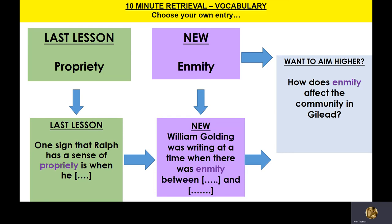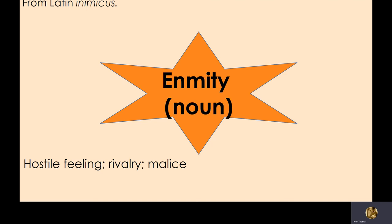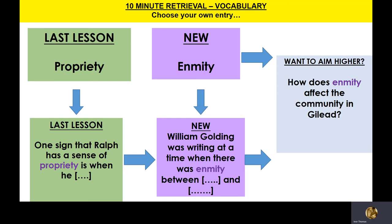Enmity means hostile feeling — from Latin 'inimicus,' meaning not friendly. It suggests rivalry or malice. We're going to look today at the enmity of the island. William Golding was writing in 1956 — remember the context, he was a navy officer. What was going on in the world? And how does enmity affect the community in Gilead? What rivalries are there between places or people in Gilead, and what caused the war in the first place?